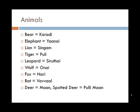Some more animals. Bear is karadi. Elephant is yaanai. Lion is singam. Tiger is puli. A leopard is siritai. Wolf is onai. Fox is nari. Bat is vawal. Deer is maan, and a spotted deer is pulli maan. Pulli basically means spots or circles, so pulli maan.